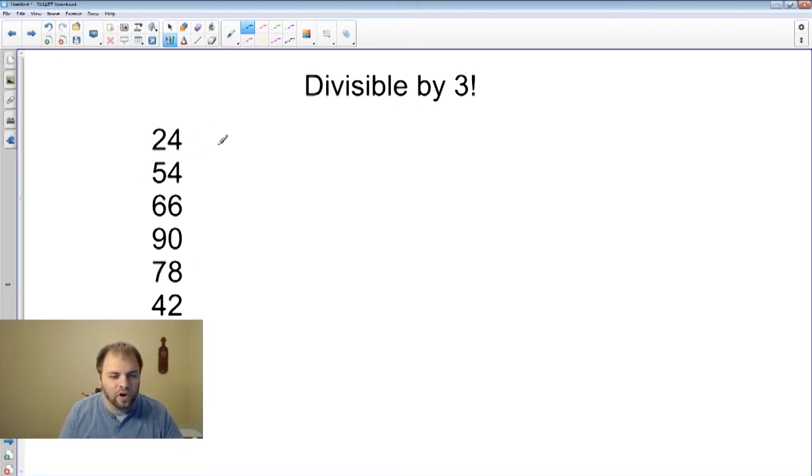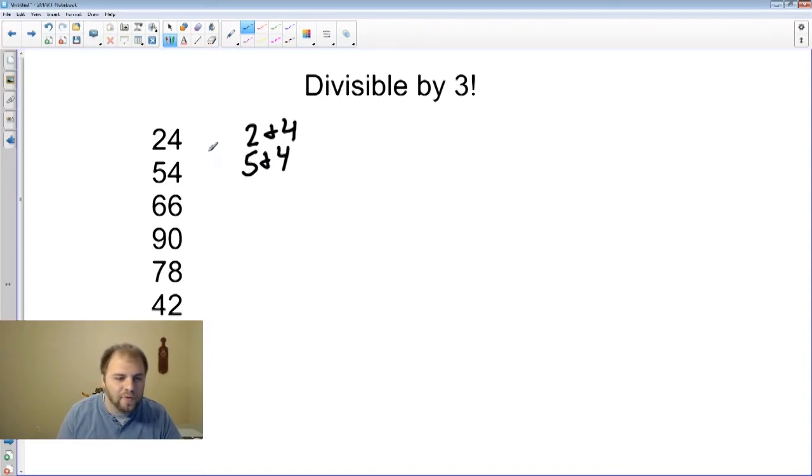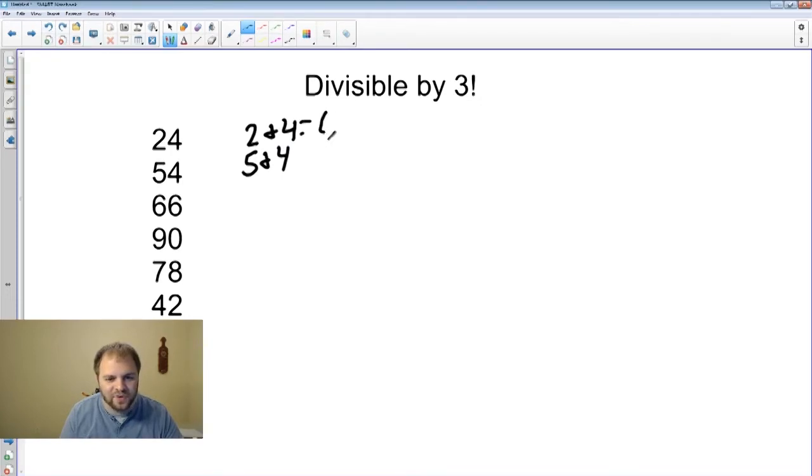You didn't see 24, what you actually saw was two and four. That's what you saw. You saw five and four, and when you first heard about addition you probably wanted to take these numbers and add them. So two plus four equals six. Teacher's messing up already. And five plus four is nine.